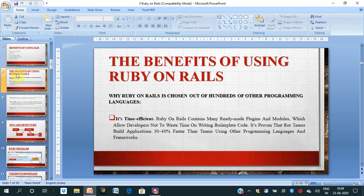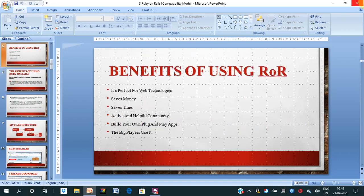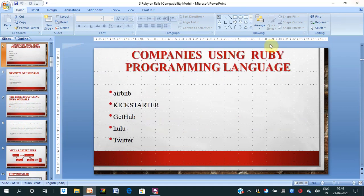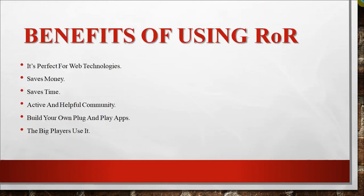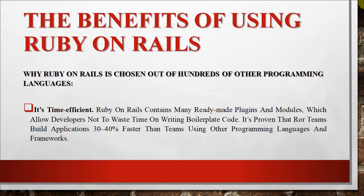Ruby on Rails is a very important programming language and it is an open source programming language. There are so many benefits. Many companies are using Ruby on Rails — the list includes Airbnb, Kickstarter, GitHub, and Twitter. So many companies use it because it is cost effective, very easy to work with, and easily available on GitHub and other sites because it is open source. Nowadays it is building software 30 to 40 percent faster than other programming languages, so we can develop web software in Ruby on Rails.